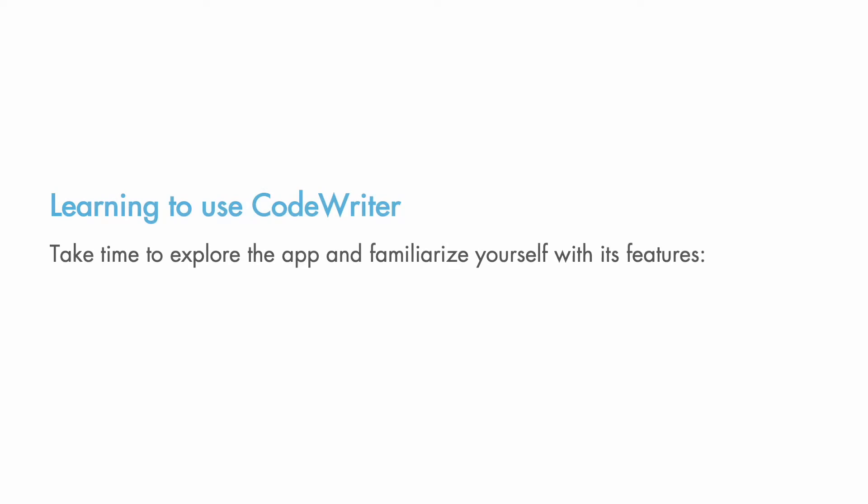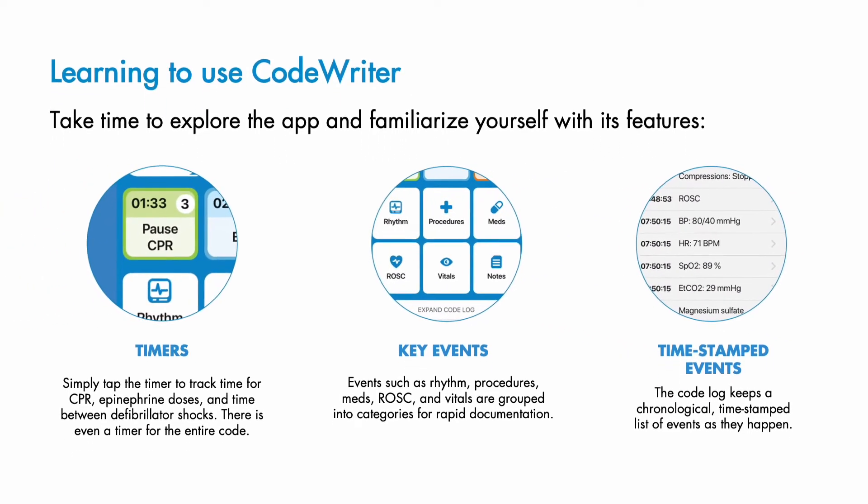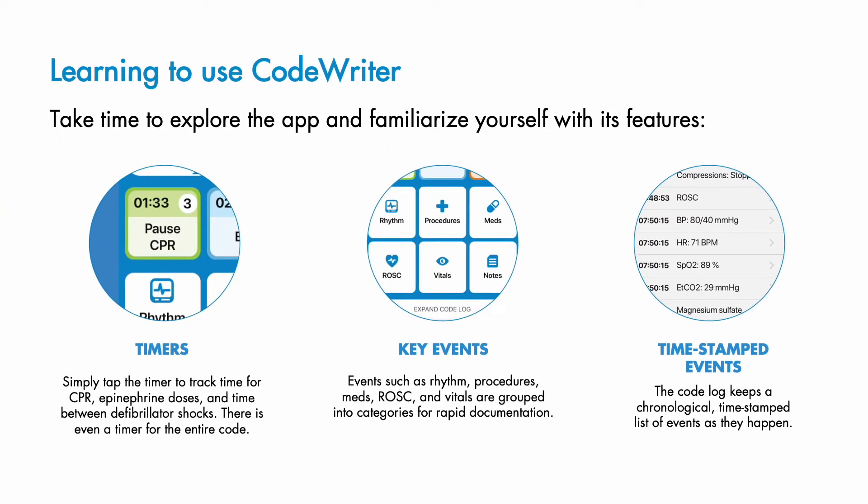Initiate a practice code and explore all of CodeWriter's features. Notice the timer buttons on the top row and review all key events you can record, such as rhythm, procedures, meds, ROSC, and vital signs. Refer to your code log as you interact with different features.